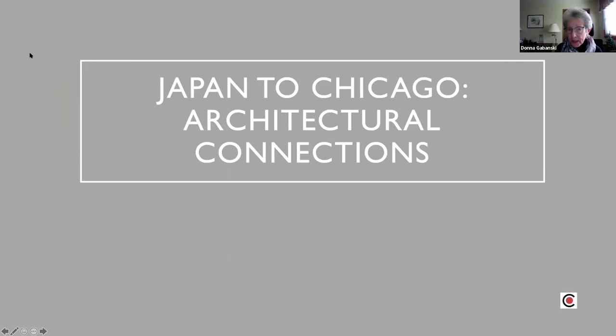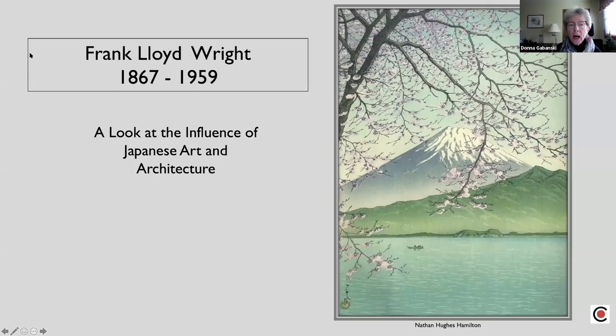We call our presentation Japan to Chicago Architectural Connections. I'm going to begin with the influences of Japanese art and architecture on the work of Frank Lloyd Wright, and then Joan will do the second part of the program on contemporary Japanese architects and some of their work in Chicago.